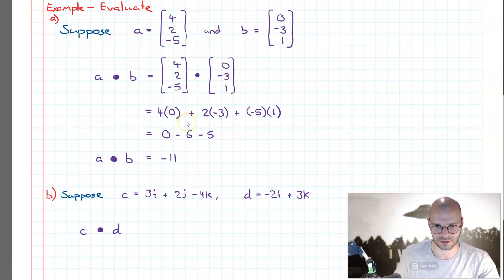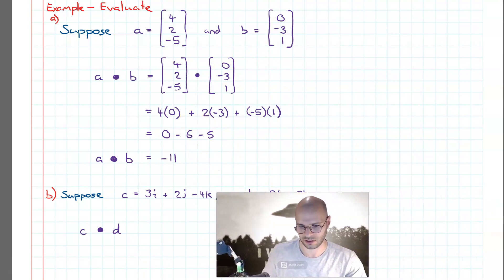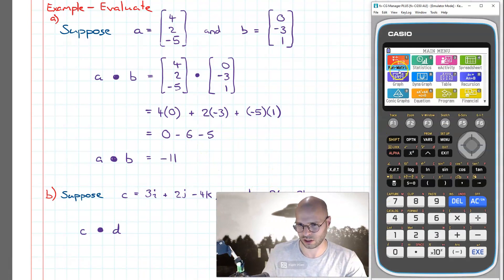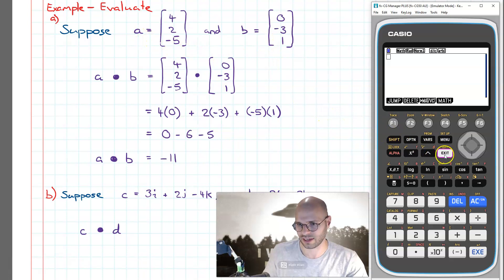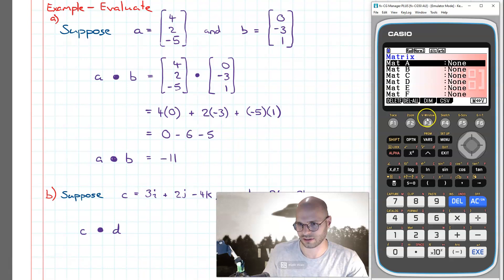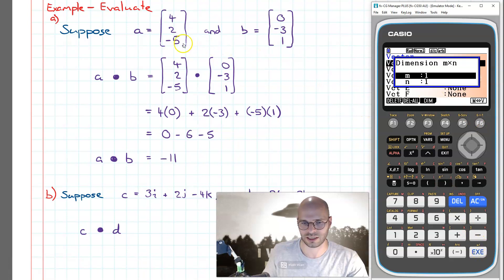Now that we can do the manual calculation, let's have a look at how we can use our calculators to automate this. We go into mode one — run matrix — and then we need to input our two vectors, vector a and vector b. To do this, press exit a few times to reach the top menu, then F3 to go into mat/vec, and press F6 to navigate over to the vector menu. I'm going to input these vectors as a three-by-one vector.